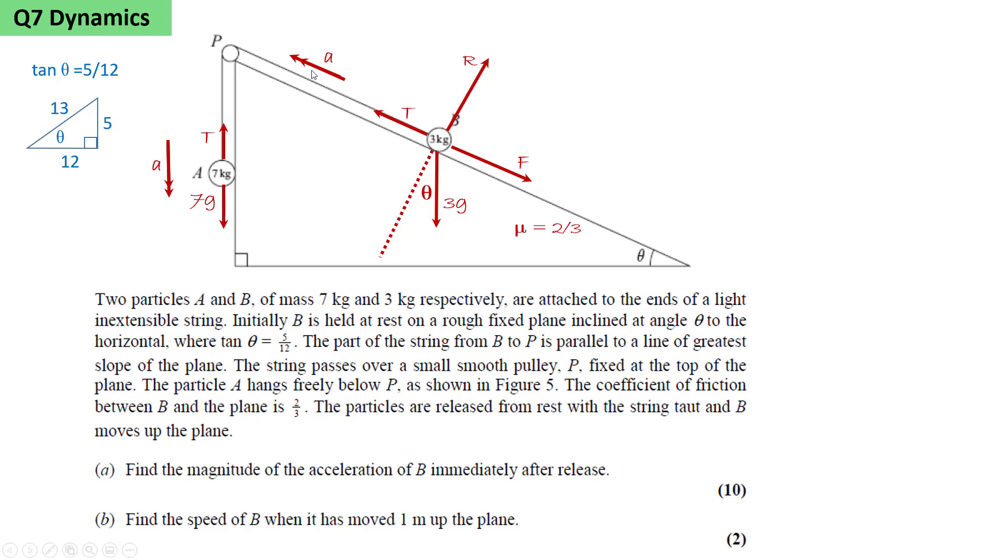We're asked to find the magnitude of the acceleration of B immediately after release. Resolving perpendicular to the plane, we can see that R equals 3g cos theta, and F equals 2/3 R, so F will be 24g/13.